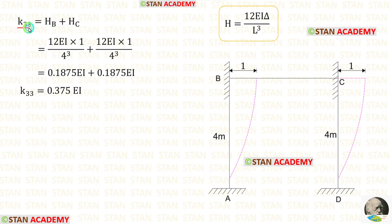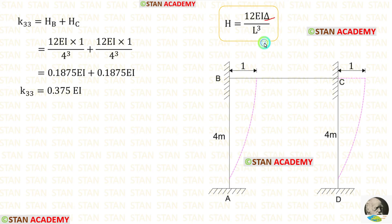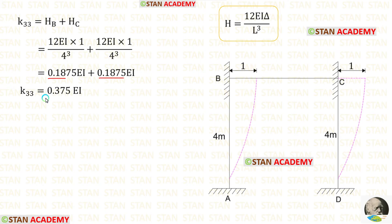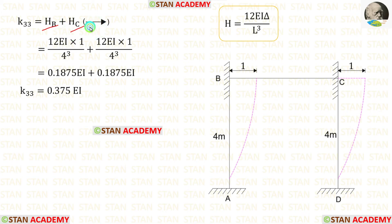Now let us find K33. For that, we add the horizontal reactions at points B and C. The formula for horizontal reaction due to sway is 12EI·delta/L³. With delta = 1, length of BA = 4, and length of CD = 4, we calculate and then add the two values, getting 0.375EI. Both reactions are acting towards the right side, which is the coordinate direction, so both are positive. Therefore K33 = +0.375EI.